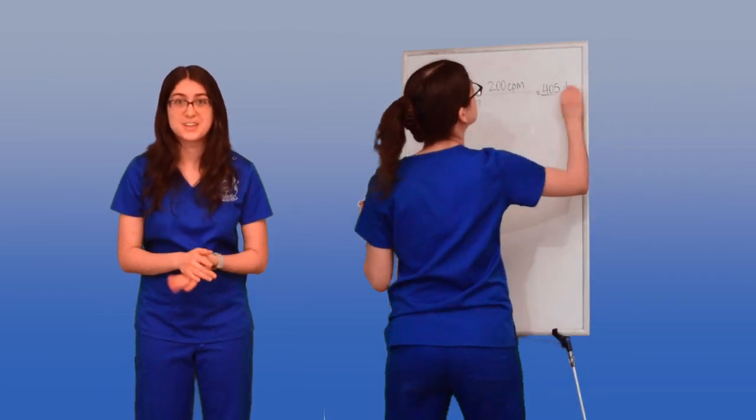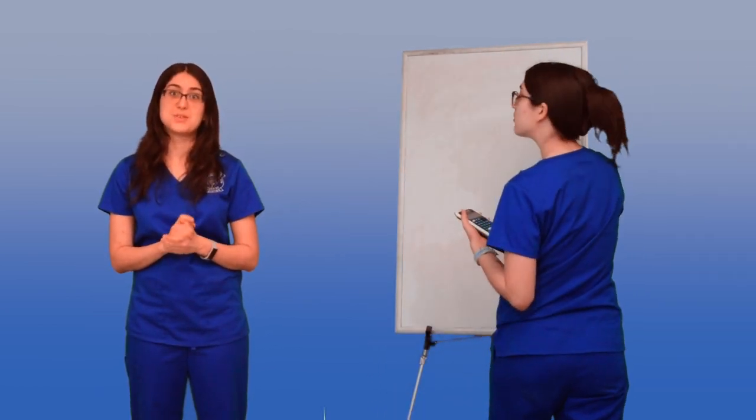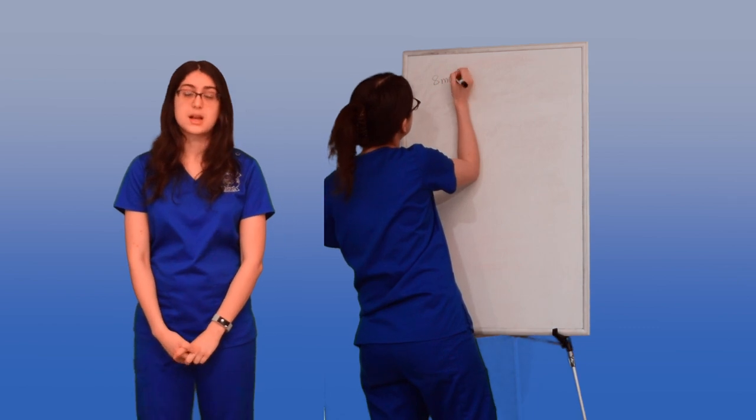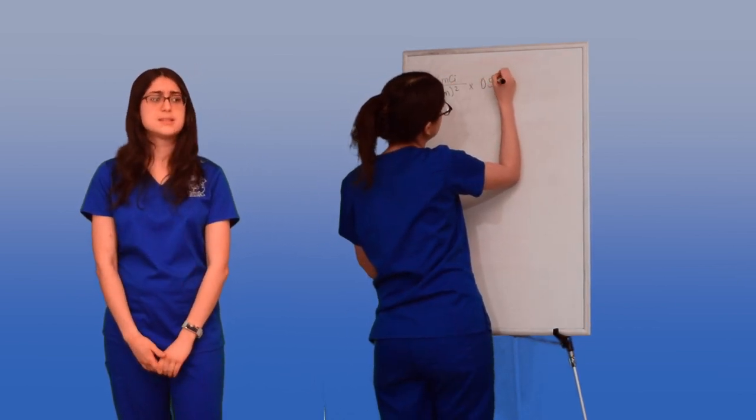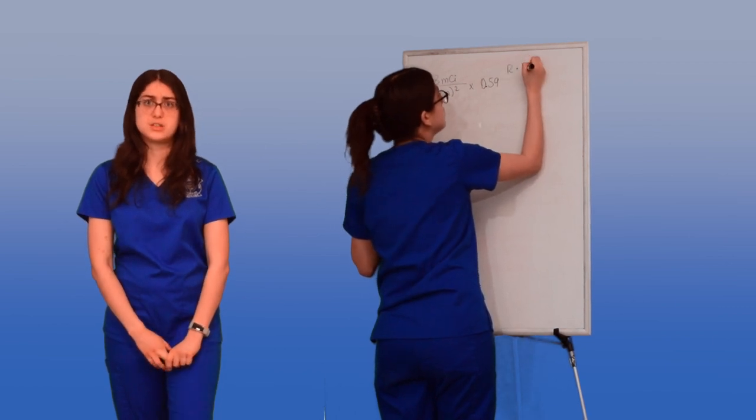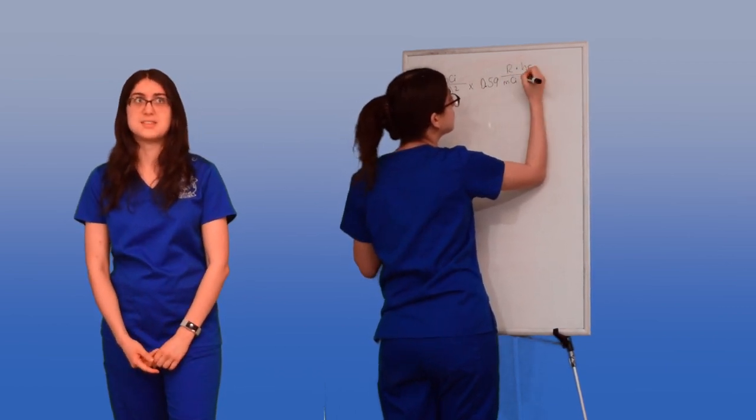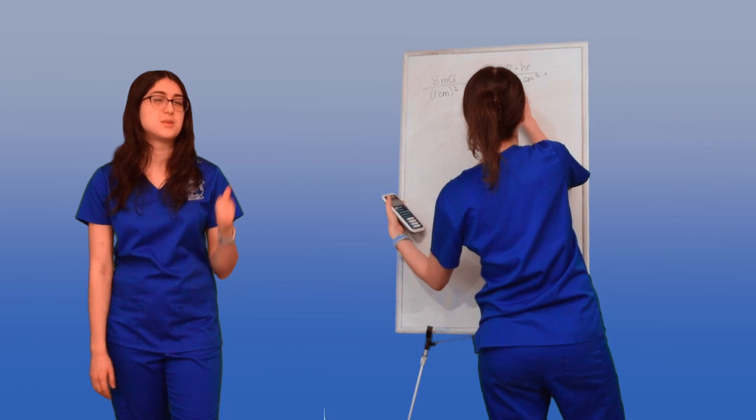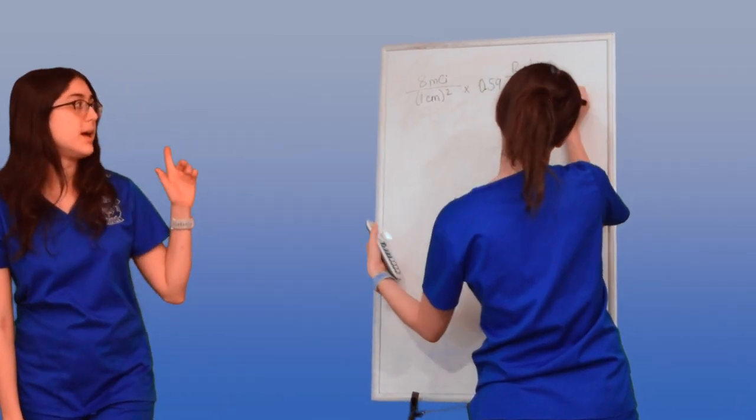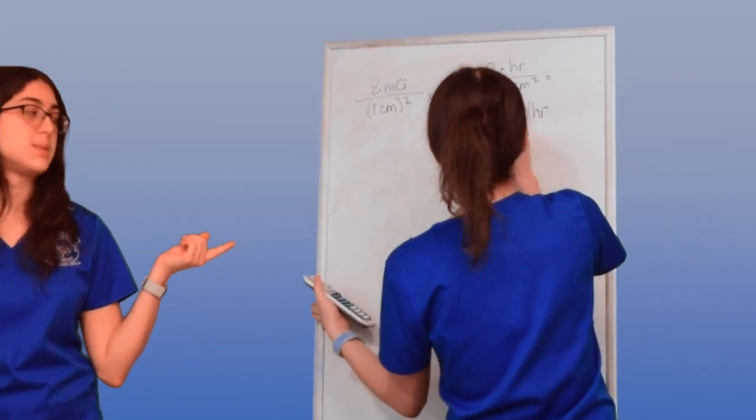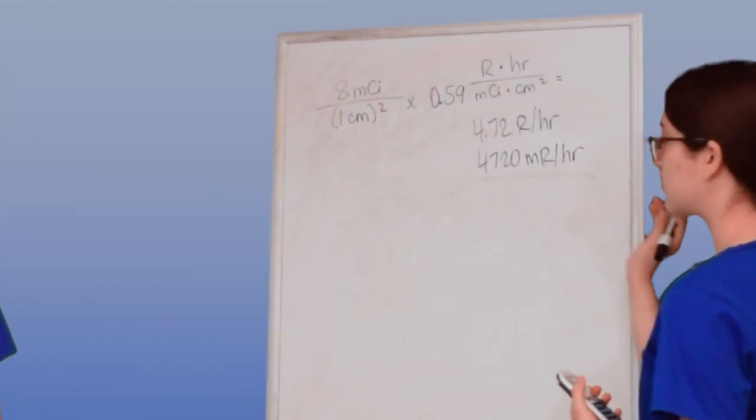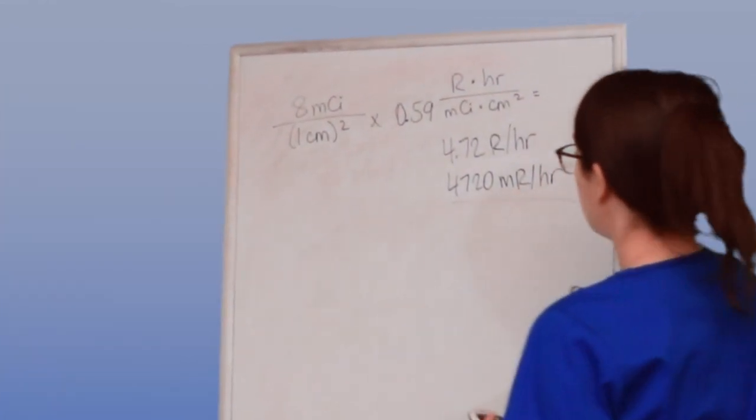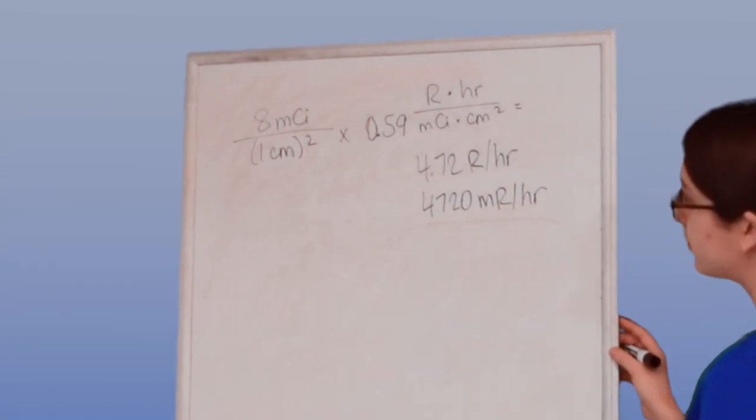Okay, so we've opened our package, and now I draw up my dose. So I draw up 8 millicuries, and I put a 3 millimeter lead syringe shield on that dose. What is the intensity of that dose, now that it's shielded? First of all, I need to find out the intensity of the dose before shielding. So I'm quickly going to go back to that gamma constant, and multiply 8 millicuries as my activity at 1 centimeter times 0.59. Okay, so we have 4.72 roentgens per hour, or 4,720 millirentgens per hour.